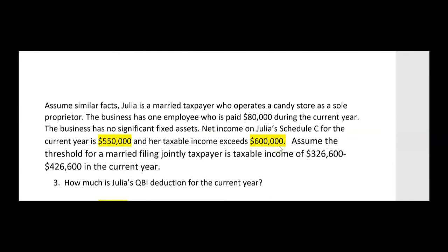Assume the threshold for a married filing jointly taxpayer is taxable income of $326,600 to $426,600. These figures will have to be given to you on the exam since they're indexed for inflation. Look at where her taxable income is right now — it's well in excess of the upper limit of $426,600.